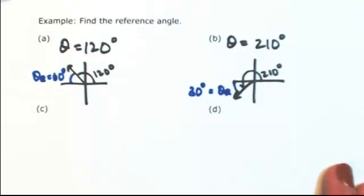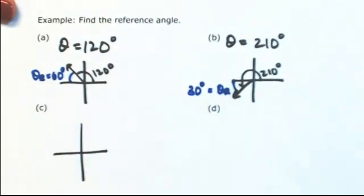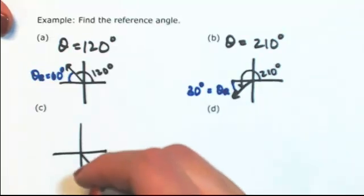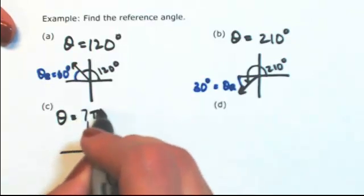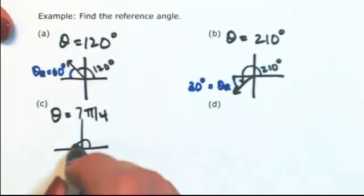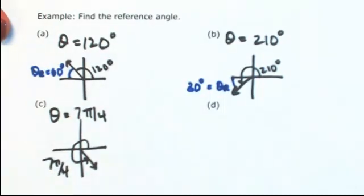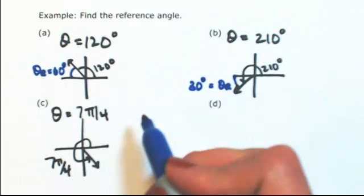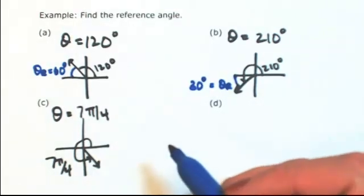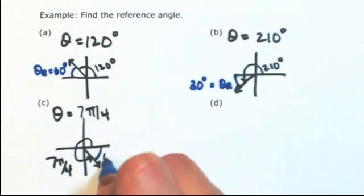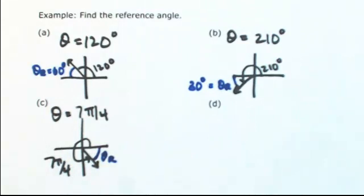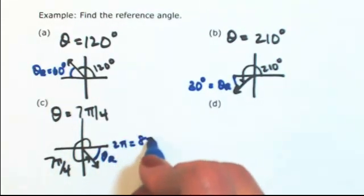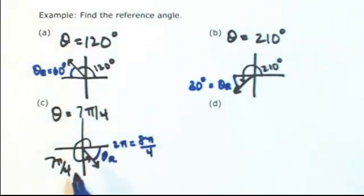Let's look at this in terms of radians. Let's do something in the fourth quadrant — let's say theta is 7π over 4. To get back to the x-axis and stay less than π over 2, we need to go forward. One full revolution is 2π, and relating this back with a denominator of 4, 2π equals 8π over 4. So if theta is 7π over 4, I just have 1π over 4 left. So theta r is π over 4.